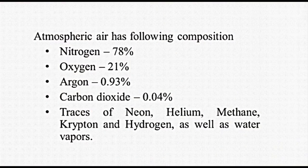Air has been used to inflate tube since its inception. Major constituents of air are nitrogen and oxygen, with atmosphere as the source. Atmospheric air composition: nitrogen 78%, oxygen 21%, argon 0.93%, carbon dioxide 0.04%, and traces of neon, helium, methane, krypton, hydrogen, as well as water vapors. Oxygen present in air is a matter of concern as it reacts with rubber while permeating through it and degrades it.